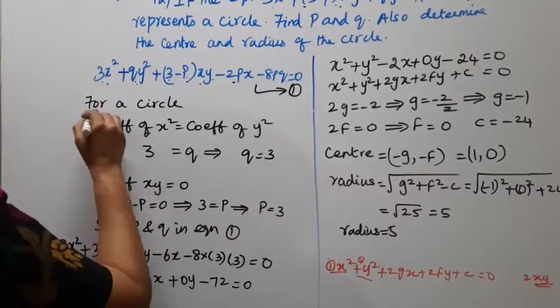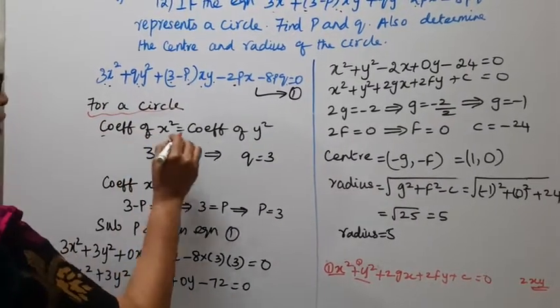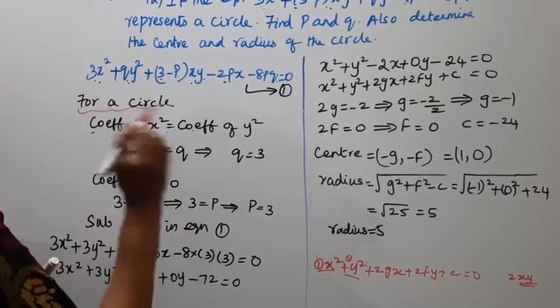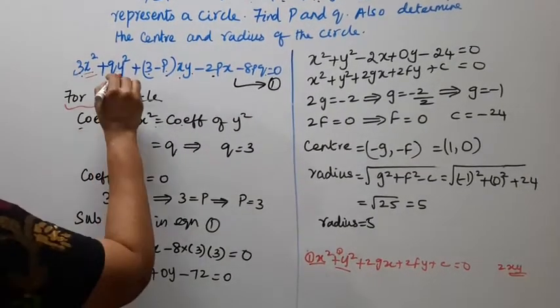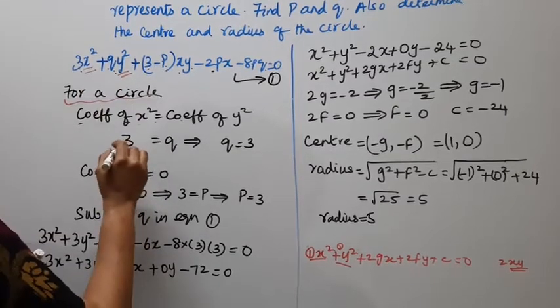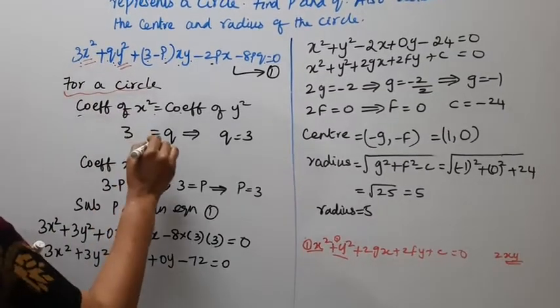The coefficient of x² and coefficient of y² must be the same. The coefficient of x² is 3, the coefficient of y² is q. Therefore 3 = q.